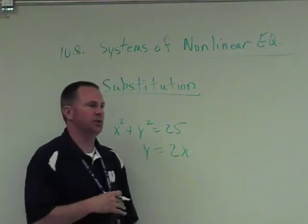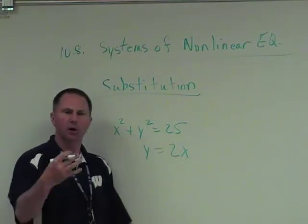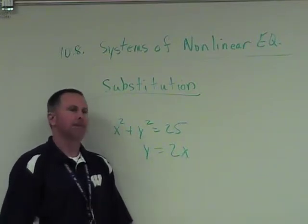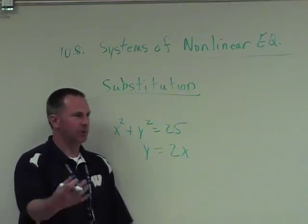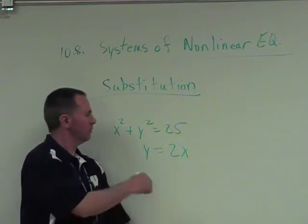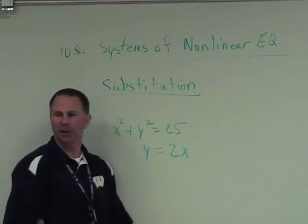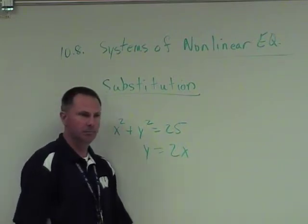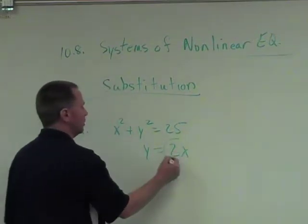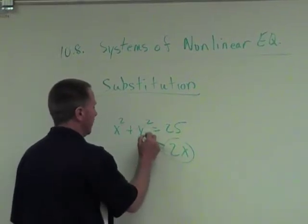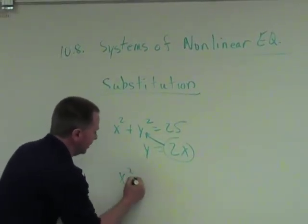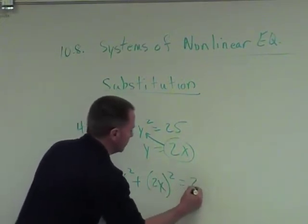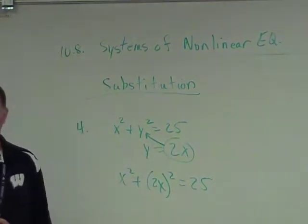How do you do substitution? What is it that you're supposed to do to begin? You want to get one variable solved. We have that in the second one. What do you do with that information then? Put it into where the variable is in the other equation. So I'm going to put 2x in for the y in the other equation. So x squared plus the y squared equals 25. Everybody solve it from there, please.